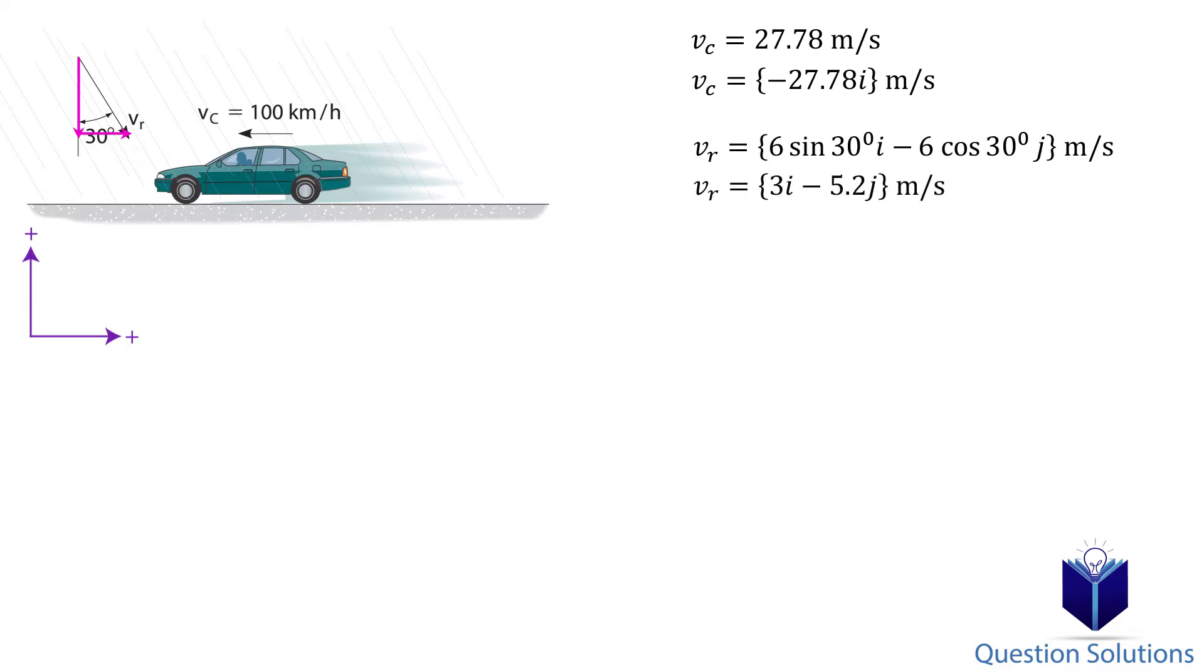Since the question asks us to determine the velocity of the rain as seen by the driver, we need to find the relative velocity of the rain with respect to the car. So we can use this equation. Let's plug in the values we know and solve.